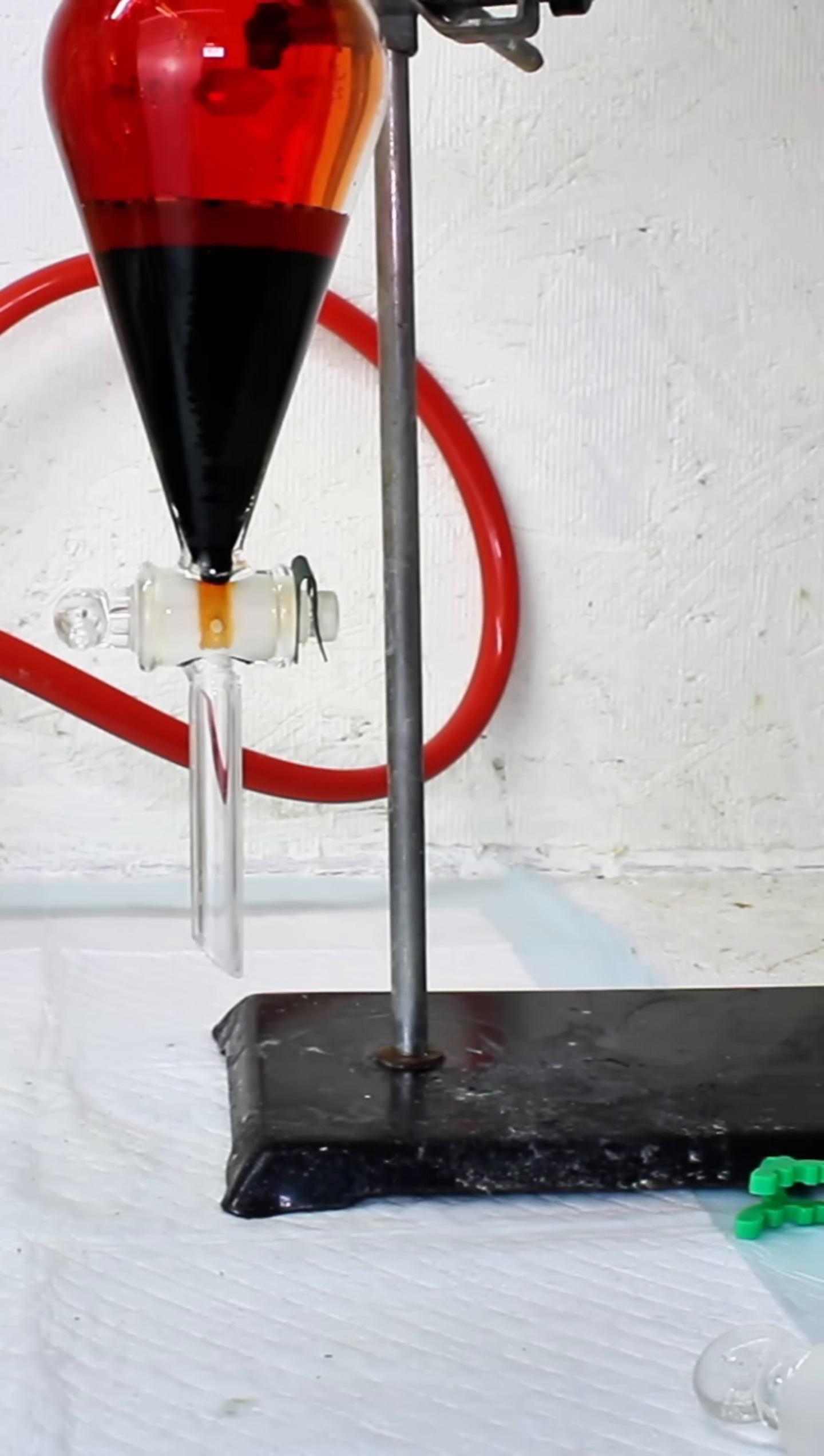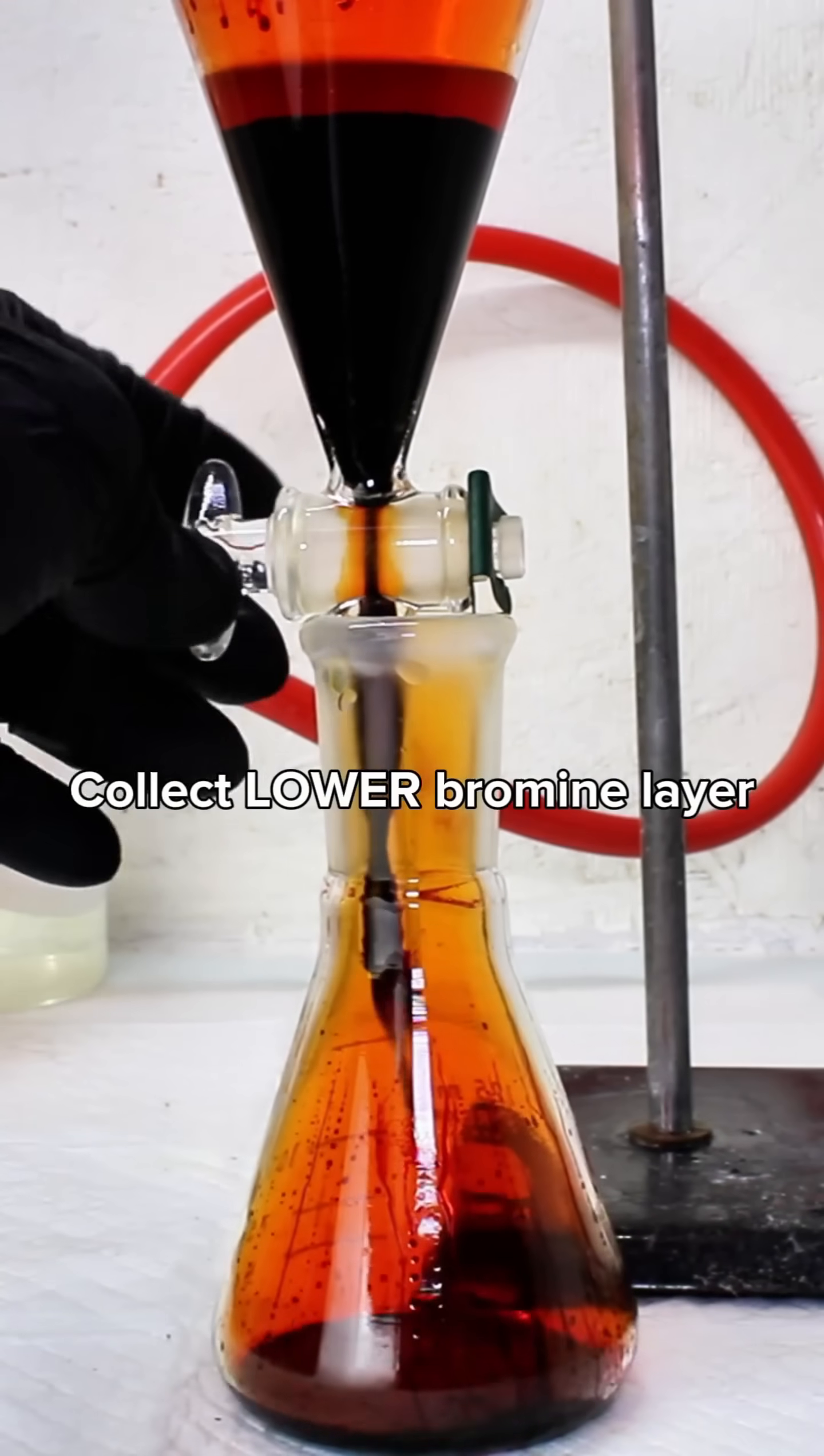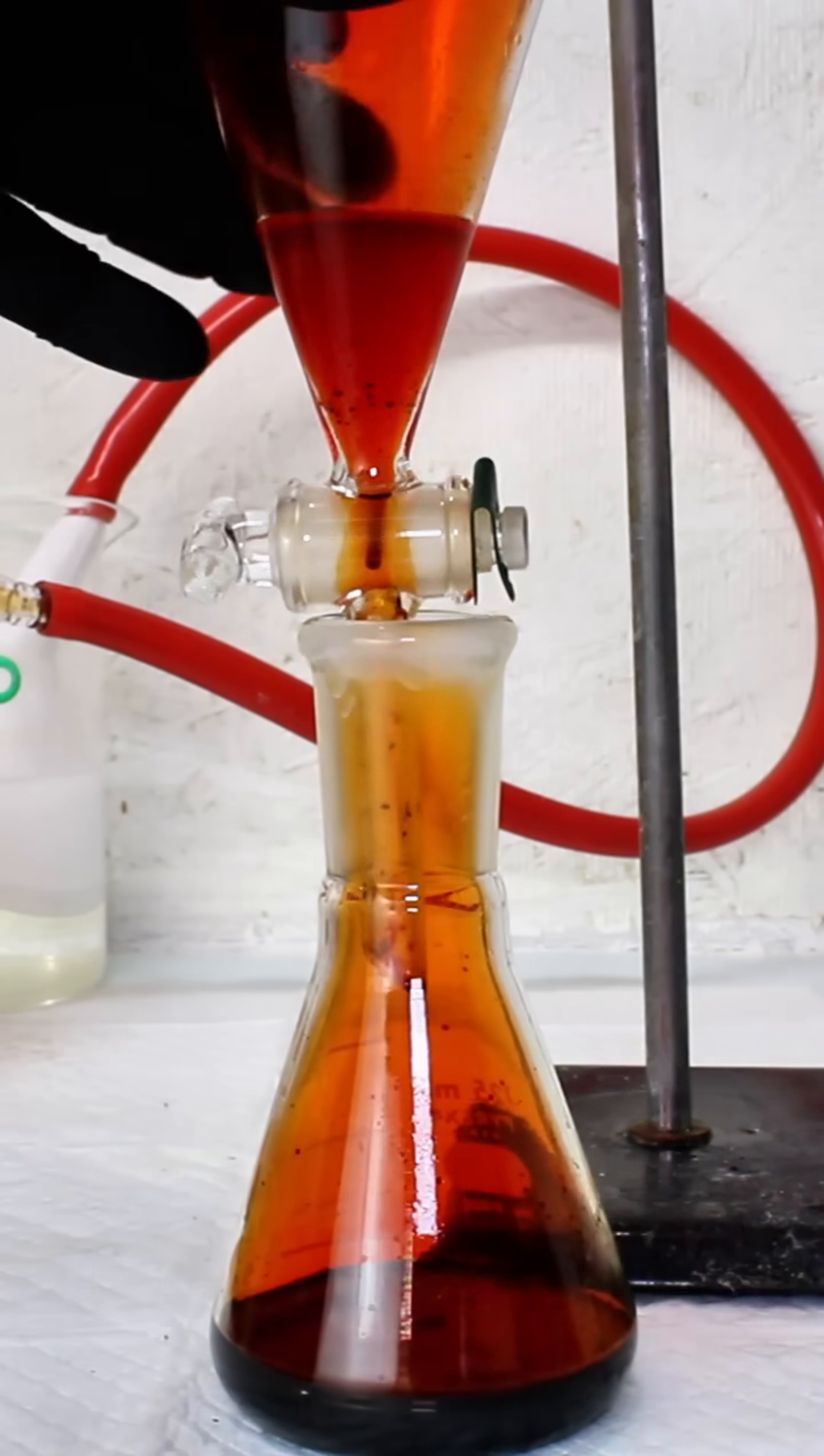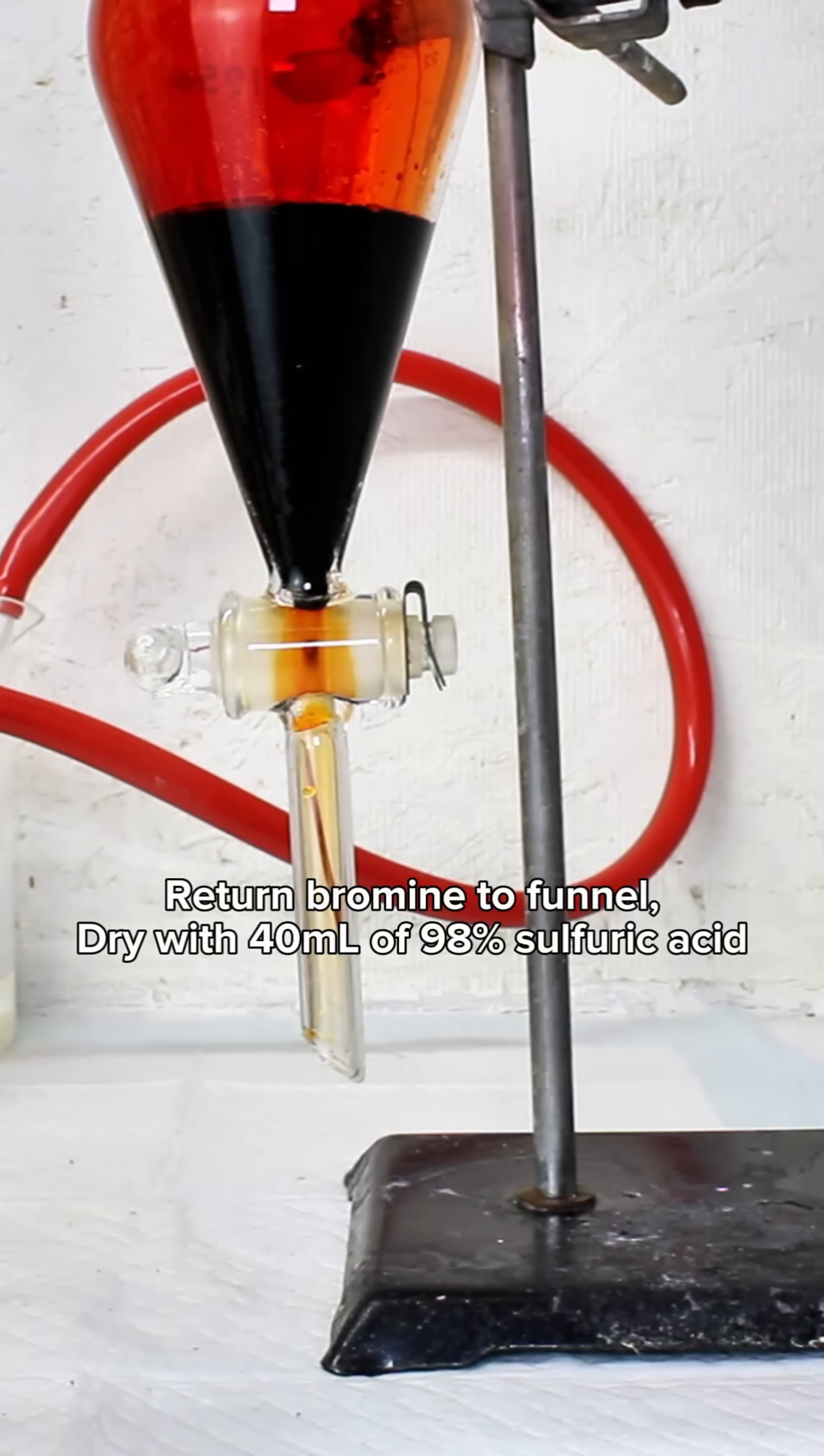You can however store bromine in glass ampoules, which can be easily made by heating up test tubes and pulling out the neck. Once I've made a few of these, I use a separatory funnel to remove the excess water from my bromine, and then I dry it using 98% sulfuric acid.